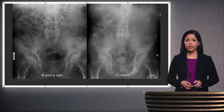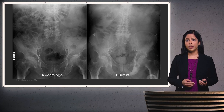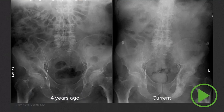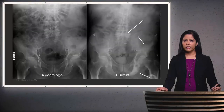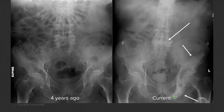Let's take a look at this case, focusing on the bony structures. Can you see the difference between the image obtained four years ago and the current image of the same patient? The areas that look different include an increase in density within the lower lumbar spine, an increase in density within the iliac bone, and an increase in density in the inferior pubic ramus when compared with the prior.